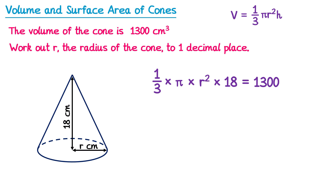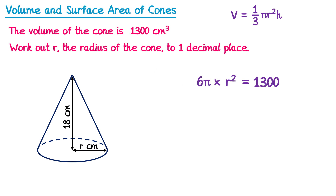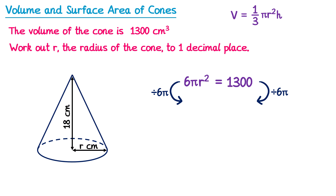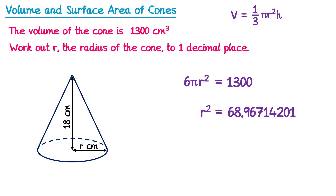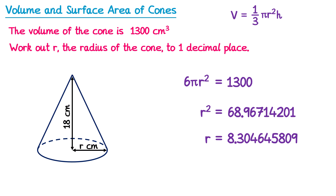Rearranging the multiplications: 1/3 × π × 18 = 6π, so we have 6π r squared = 1300. Divide both sides by 6π: r squared = 1300 ÷ (6π). Then square root both sides: r = √(1300 ÷ 6π). Typing this into the calculator and rounding to one decimal place gives r = 8.3.